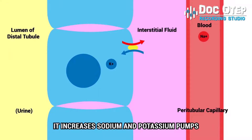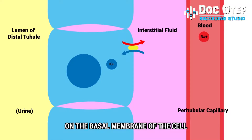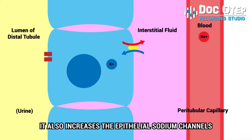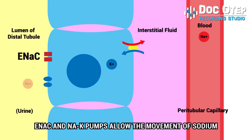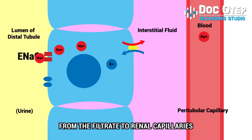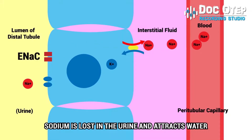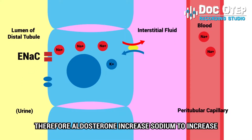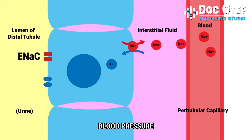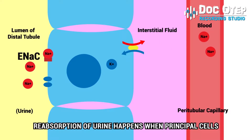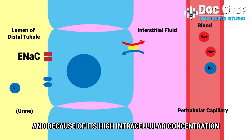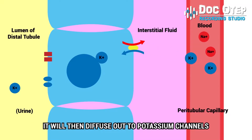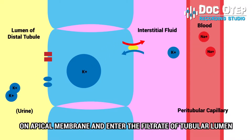Aldosterone increases sodium-potassium pumps on the basal membrane of the cell. It also increases the epithelial sodium channels, or ENaC, of principal cells. ENaC and the sodium-potassium pump allow the movement of sodium from the filtrate to renal capillaries, increasing blood pressure. Potassium enters the cell via the sodium-potassium pump and, due to its high intracellular concentration, diffuses out through potassium channels on the apical membrane into the filtrate of the tubular lumen.